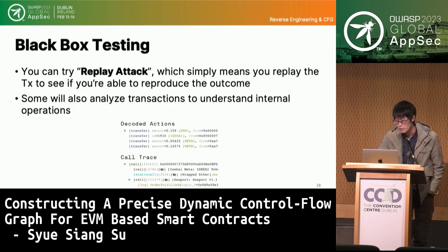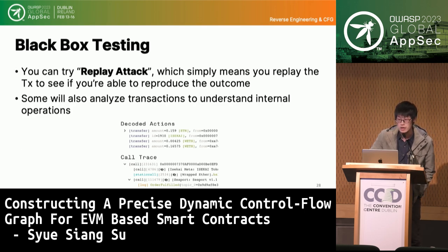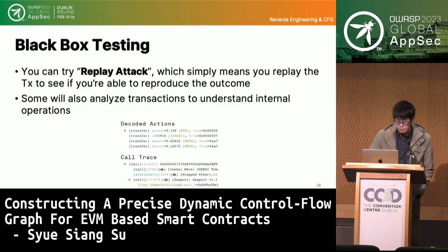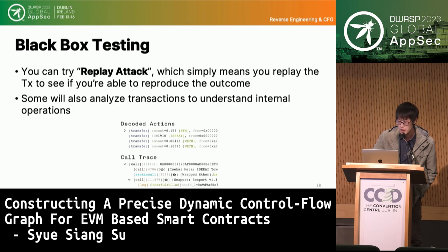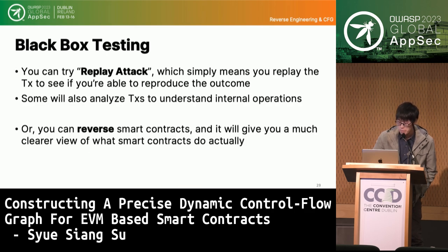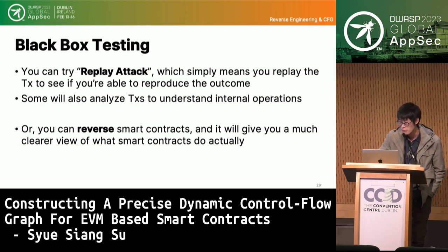For black box testing, we can always try to replay transactions by copying and pasting what we see on the blockchain. It doesn't always work, but it's worth a try. By inspecting a transaction, we can also get useful information and understand internal operations. We can also use reverse engineering, which is a clear and robust way to understand the logic behind smart contracts.